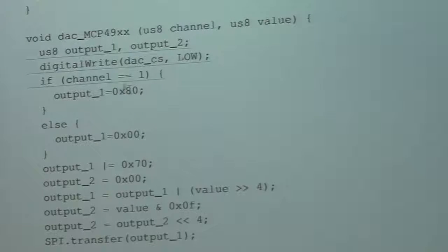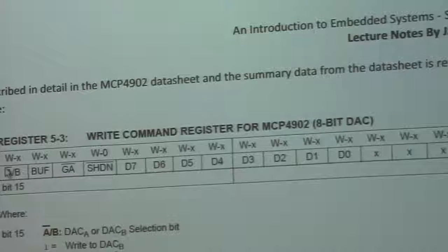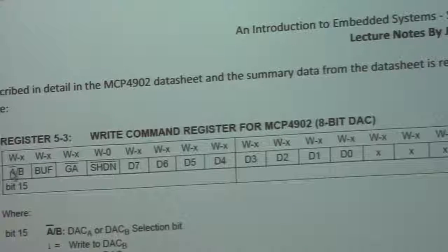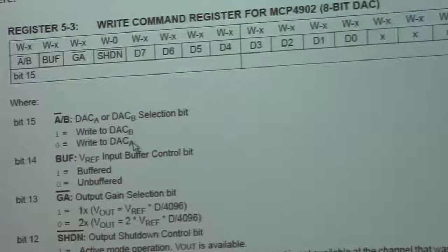So what this is doing here is setting a single bit in the output one register. In the output one register, the high, the most significant bit is either going to be one or zero. Can everybody see that? What we follow is that the most significant bit is the one that's getting set. Right? If we go back to the data sheet here, the most significant bit on the first register selects whether it's DACA or DACB.